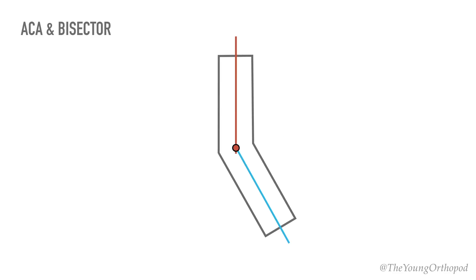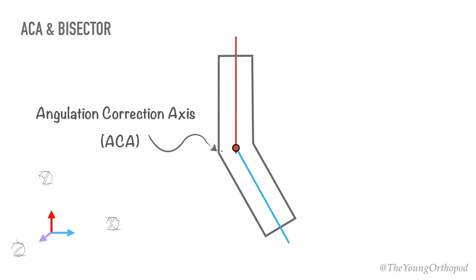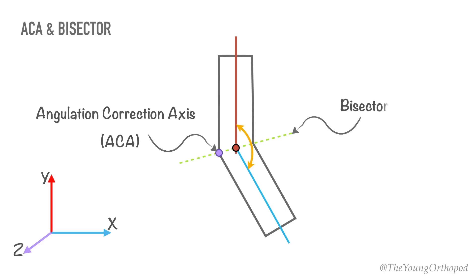CORA indicates where an axis of rotation — named the angulation correction axis, or ACA — should be placed, about which the two intersecting axes of the CORA can be brought in line, hence correcting the deformity. The bisector is a line that passes through the CORA and bisects the angle formed by the proximal and distal axes.